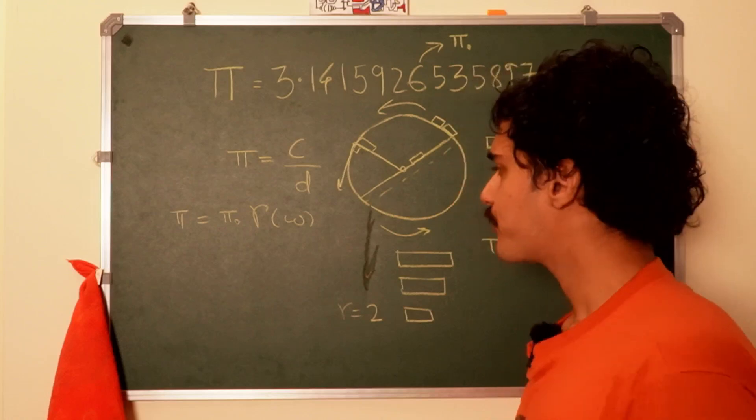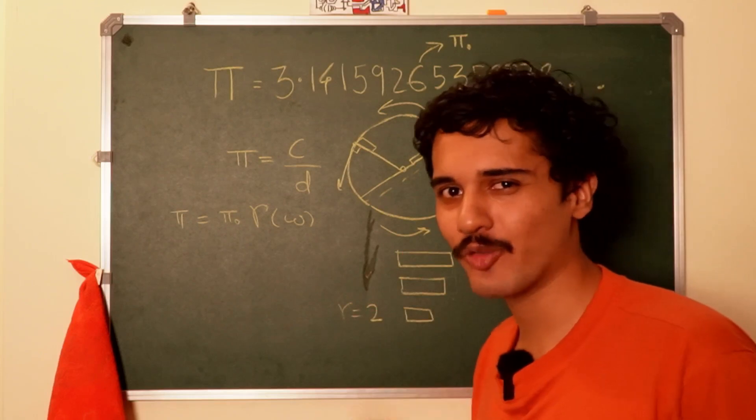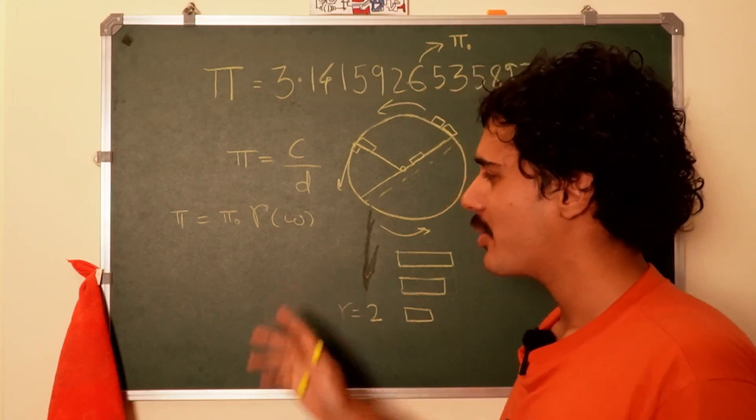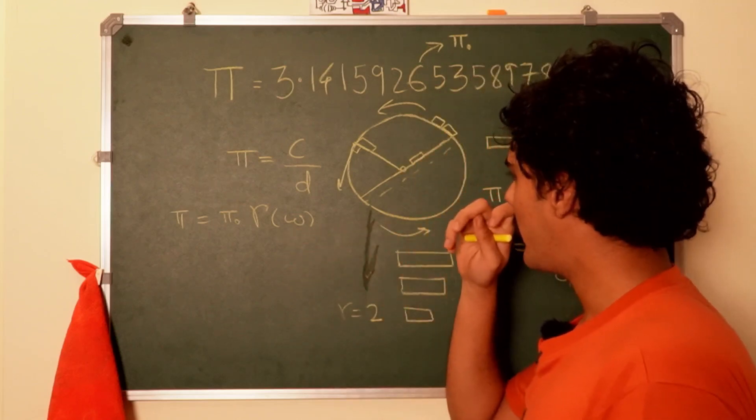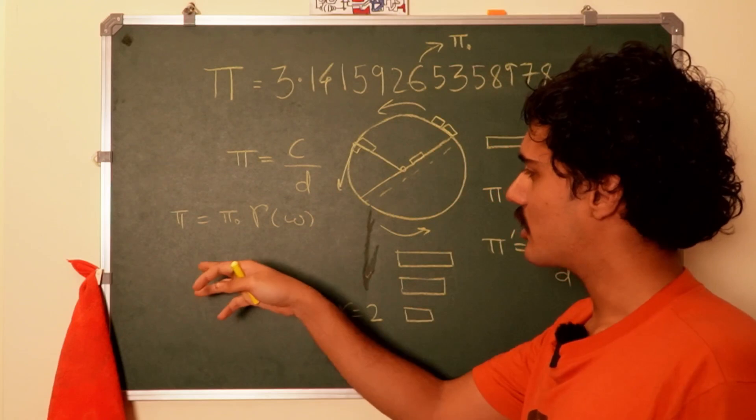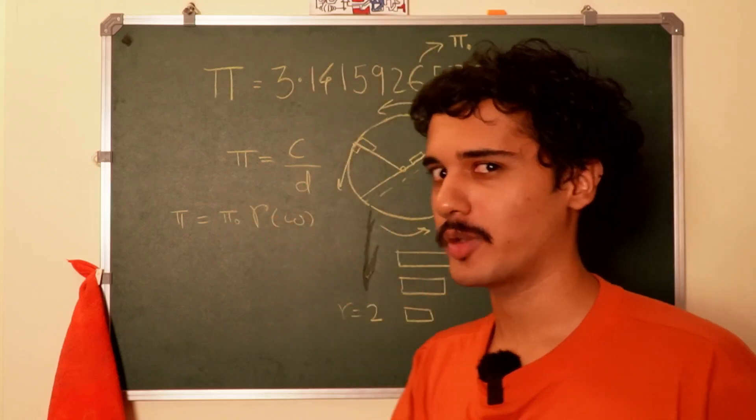But in thought experiments where you have insanely good materials, this could take any value. Now of course any real material would also have problems of deformation, elasticity, and so on, but this is limited to thought experiments. Now you might ask, can it be lower than this value? Because here it's only like pi naught or above. Now it can be lower.